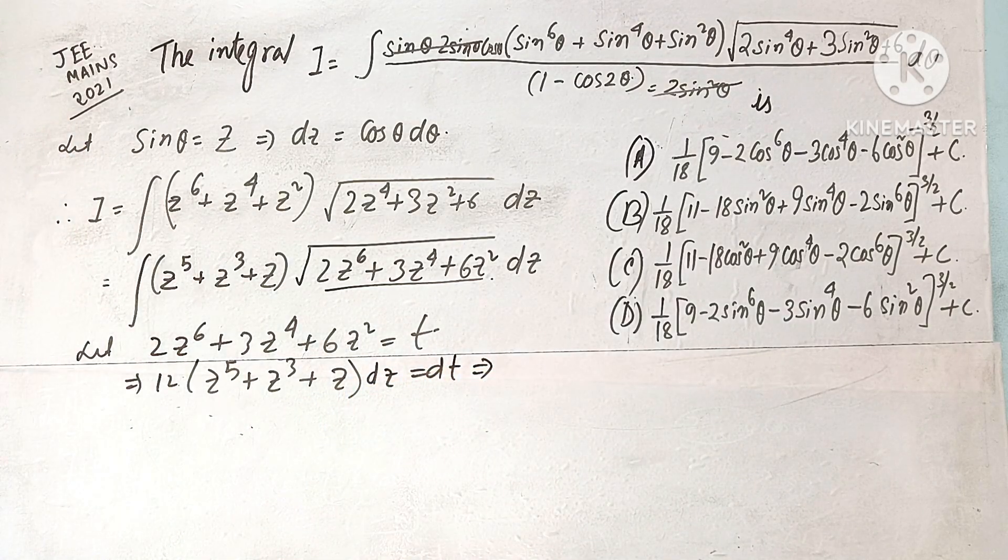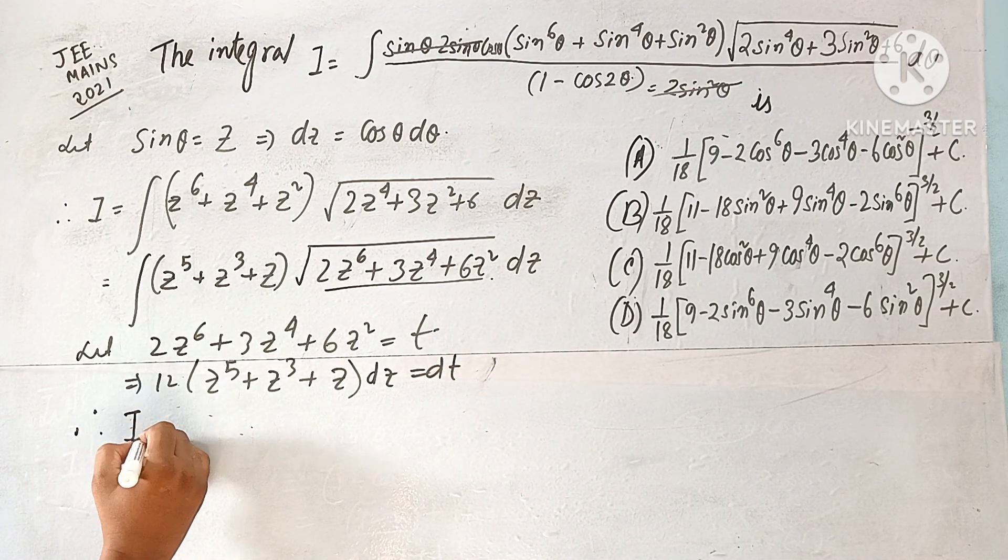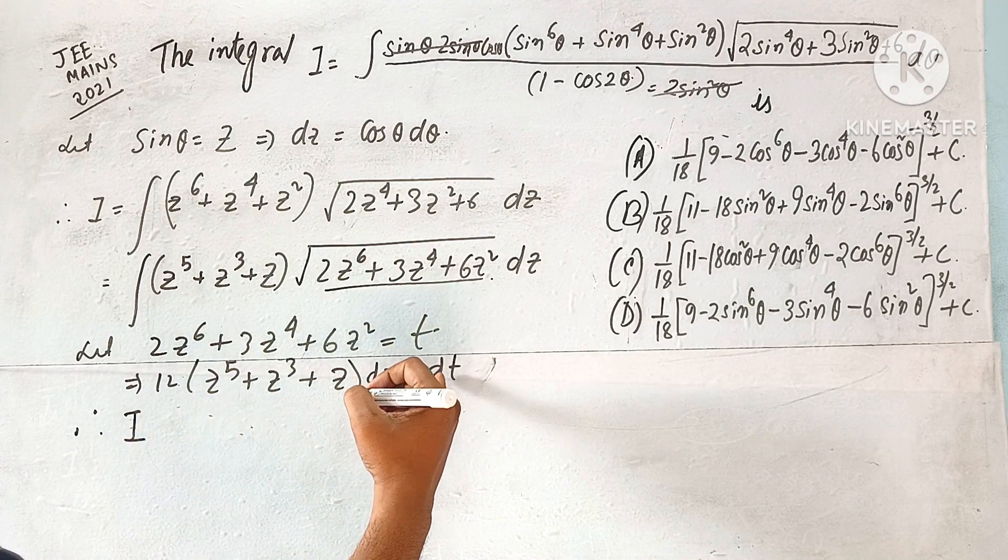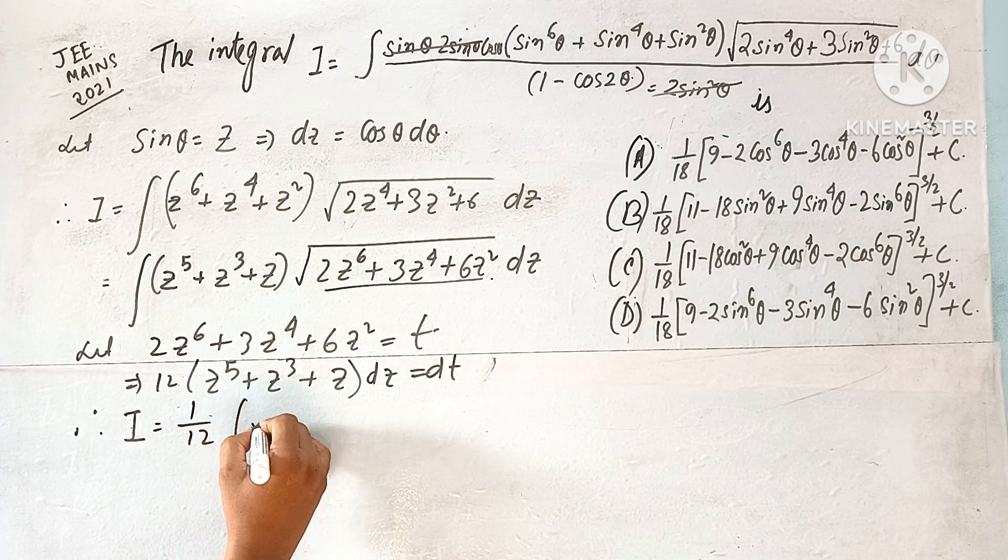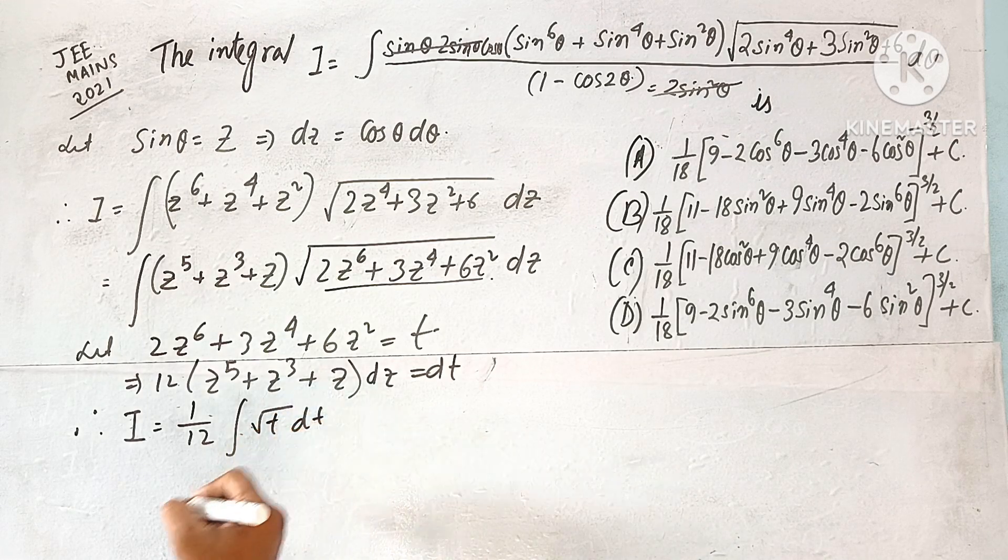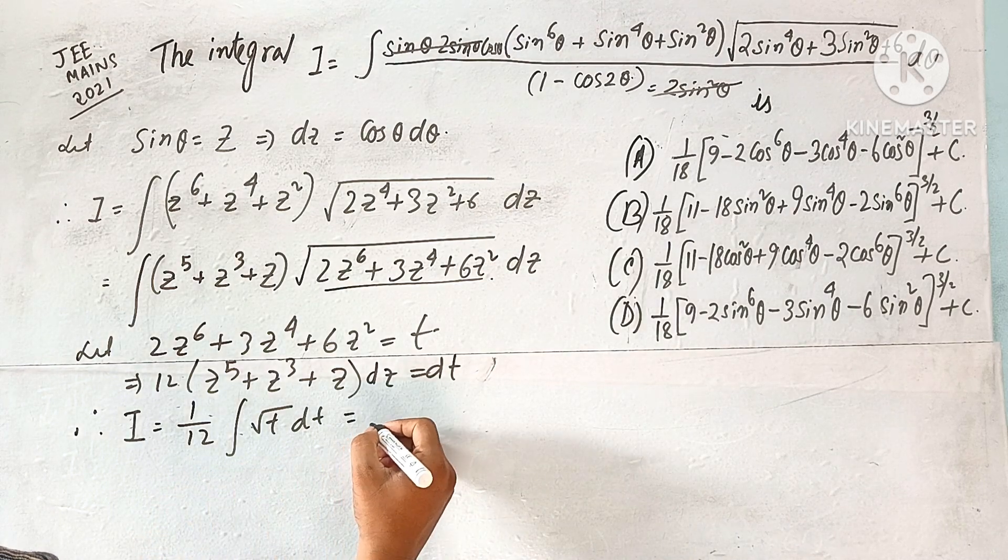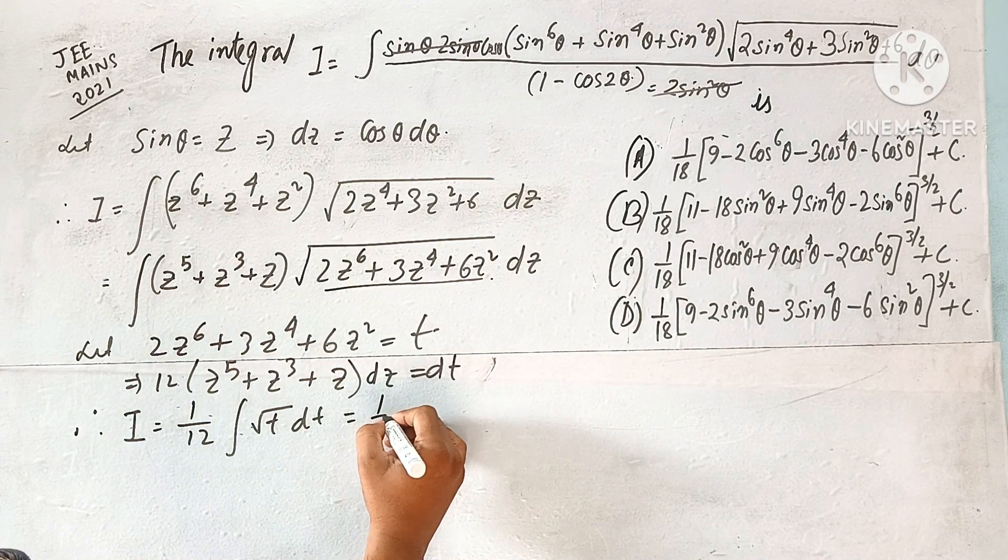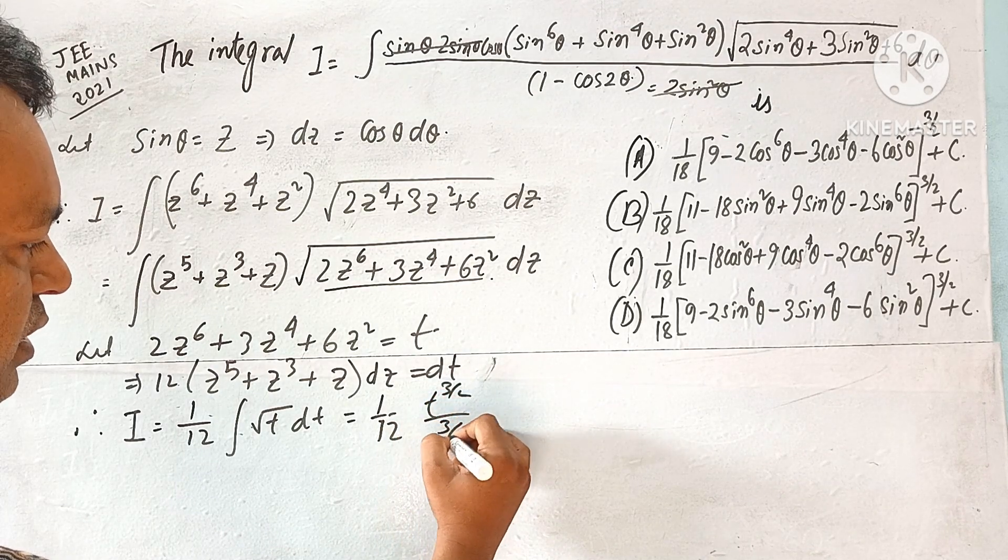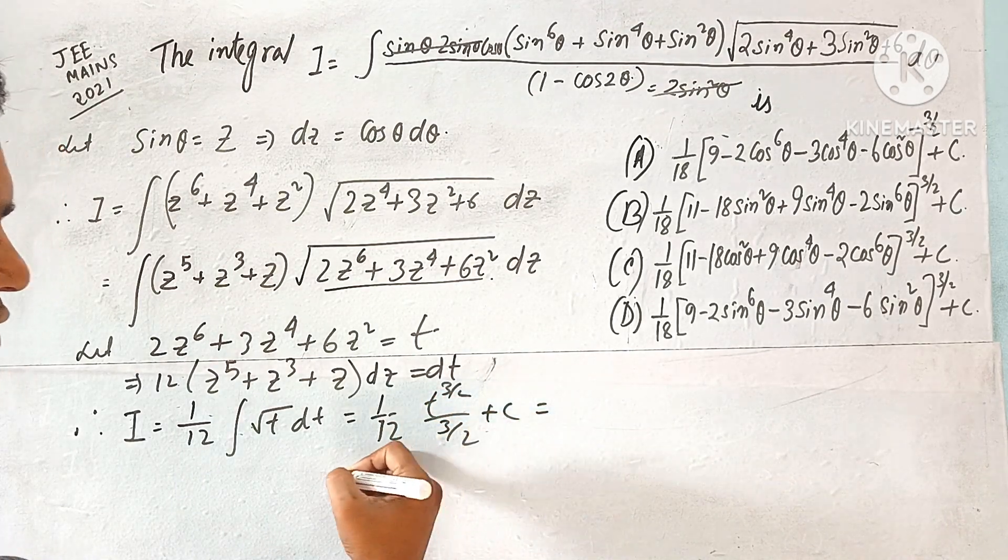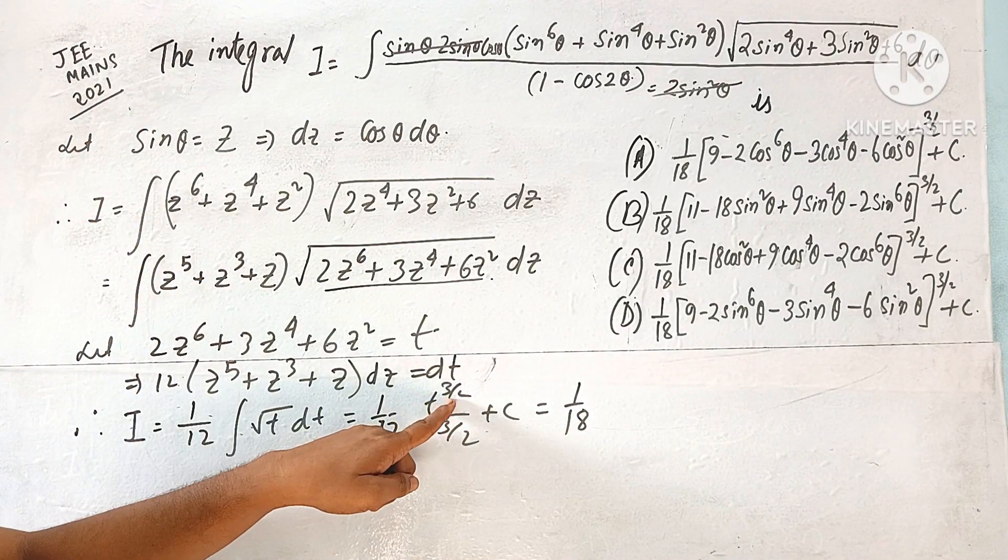So now I can be, therefore I equal to dt by 12, 1 by 12 integration root t dt. And this integral is, what is this integral is, 1 by 12 t to the power 3 by 2 by 3 by 2 plus c. This is simplify 1 by 18 t to the power 3 by 2.